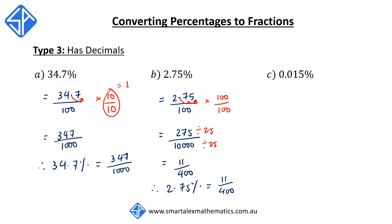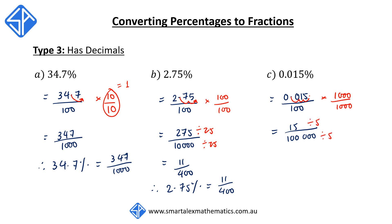We have 0.015%. We start by writing this as 0.015 over 100. We multiply top and bottom by 1,000, moving the decimal point three places to the right, making 0.015 into the whole number 15. 100 times 1,000 gives us 100,000. We simplify by dividing top and bottom by the common factor of 5, and our final answer becomes 3 over 20,000. So 0.015%, which is less than 1%, is equivalent to 3 over 20,000.